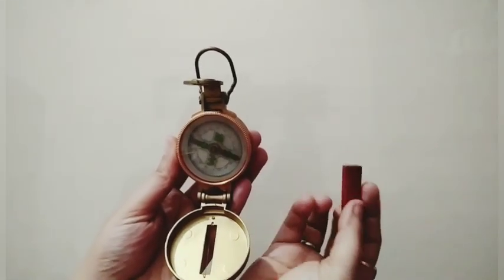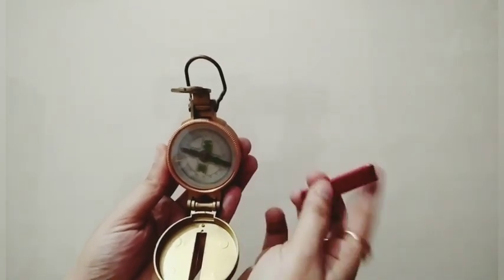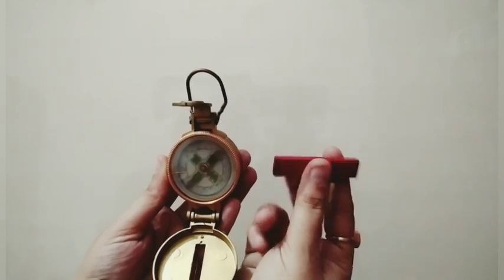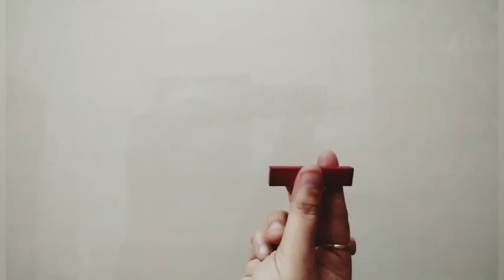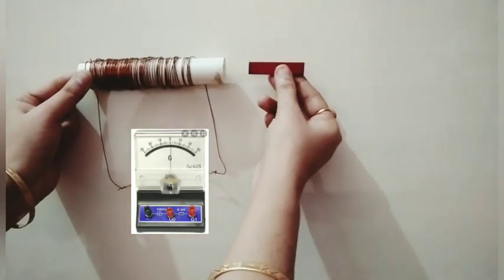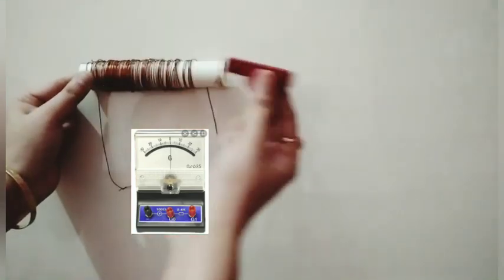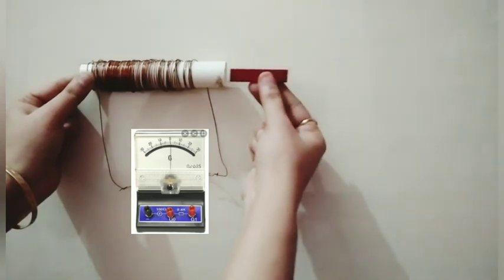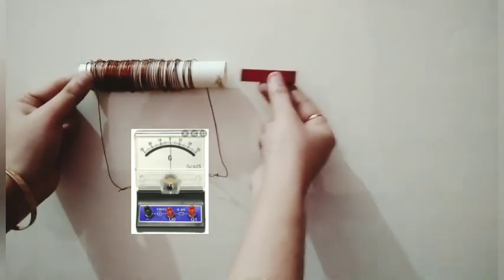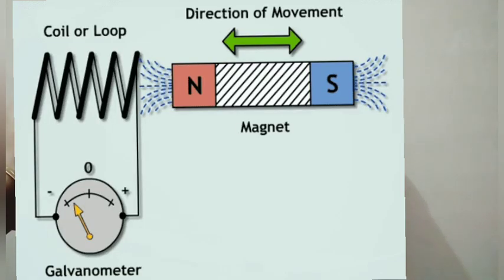Now we will place this north pole in this arrangement. When we bring this bar magnet near to it, then there is change in magnetic field. Magnetic field - what is happening? Change is happening. Due to which a current is induced in circuit, which is shown by the reading of this galvanometer.